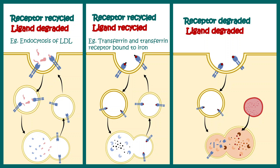In the case of epidermal growth factor receptor (EGFR), both the receptor and the ligand are degraded. This is one of the mechanisms by which signaling via EGFR is regulated. So now we understand how receptor-mediated endocytosis works, including all the detailed steps covered in this video.